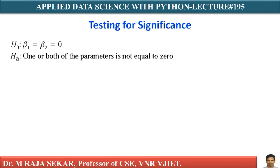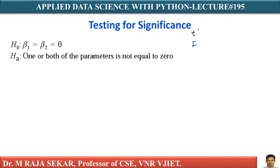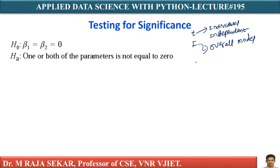Before interpreting, we have to test whether the coefficients are significant or not. In linear regression, we used the T-test for individual significance of independent variables, and the F-test for overall significance of the model. Similarly here, we use the Z-test to test significance of individual independent variables, and the G-test for overall model significance.